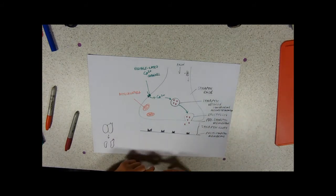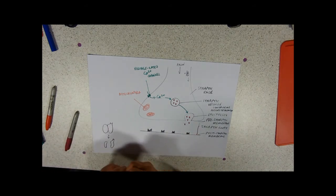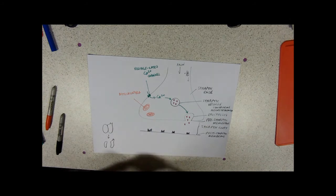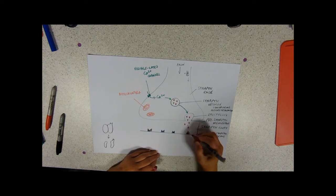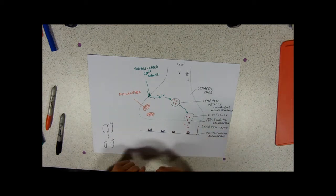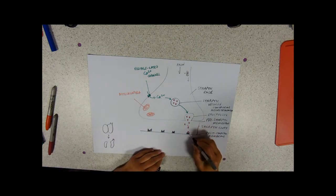The neurotransmitter will then happily diffuse across the synaptic cleft, which is only a very small gap, and it links on to receptors. So, these are all M's, represent neurotransmitter receptors.